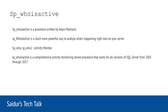You can use this stored procedure to get information and analyze what's wrong or what is causing issues in your database — for example, long-running sessions, blocking, and what kind of queries are running at a particular time. You can get all that information and much more. You can still use sp_who, sp_who2, or Activity Monitor, but sp_whoisactive is the most powerful way to get information for troubleshooting.